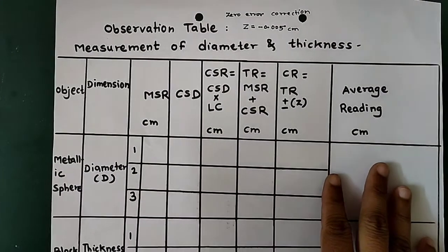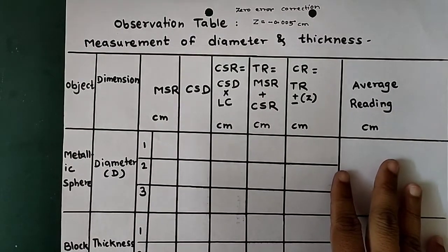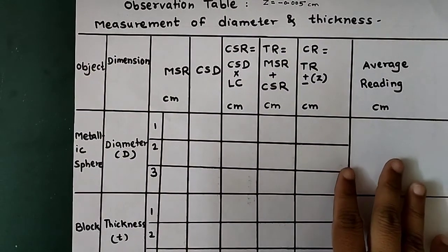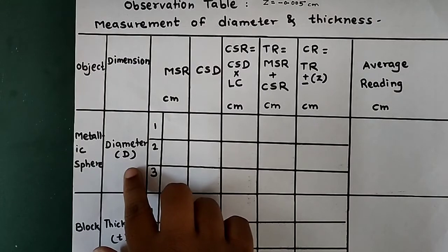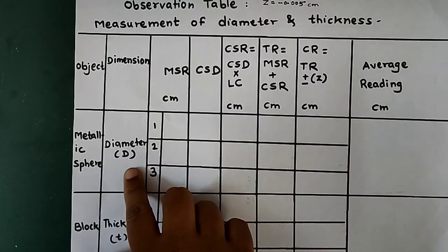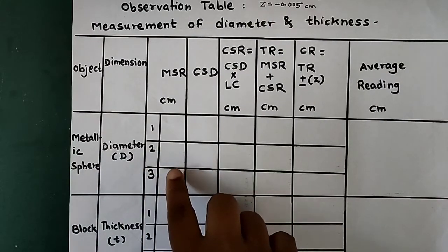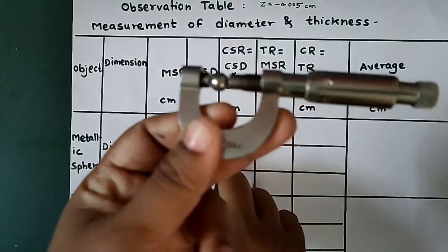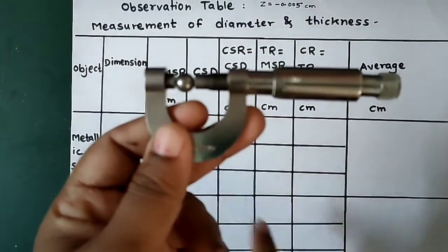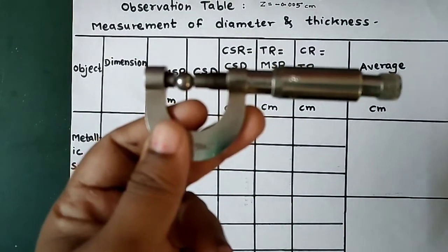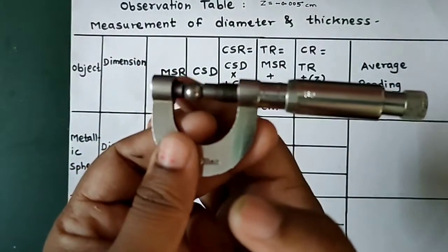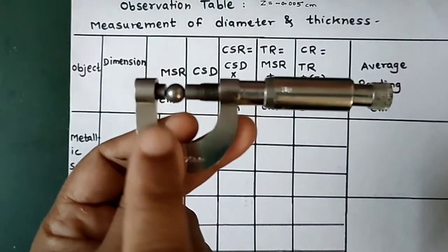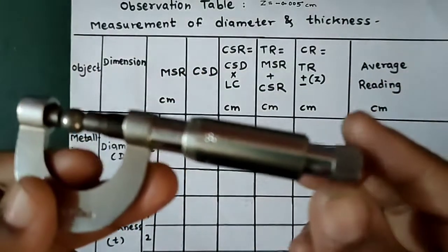This is the observation table for measurement of diameter and thickness. The first object we have taken is the metallic sphere. We are going to find the dimension of the given metallic sphere. By using the micrometer screw gauge, we will take the MSR (main scale reading) and CSD (circular scale division). We have placed the metallic sphere in between the two studs and will now take the reading.